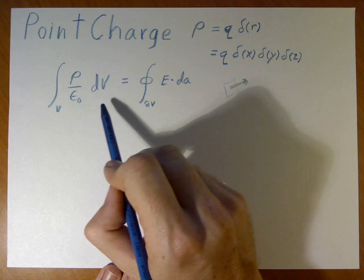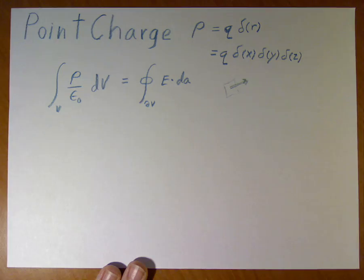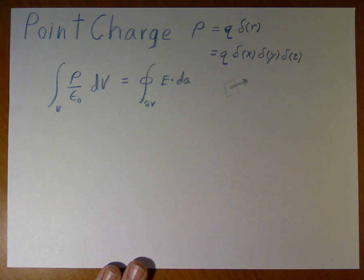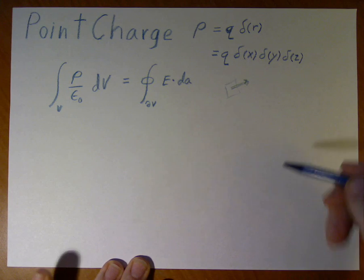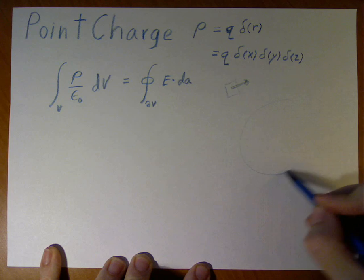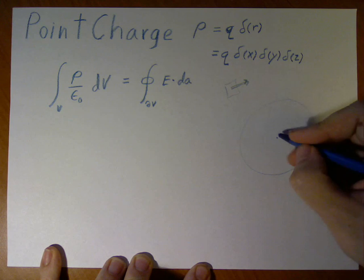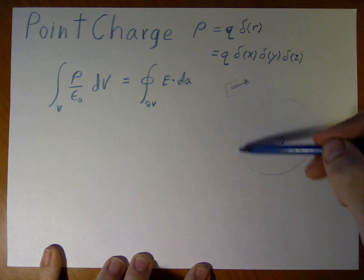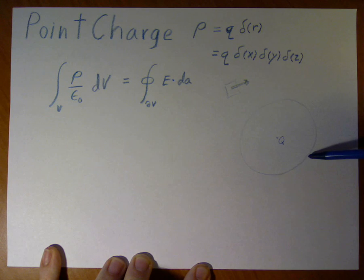Now, we could evaluate this the hard way, or we could do it the easy way, which is why we like Gauss's law. We look at, in this case we have a point charge, Q.